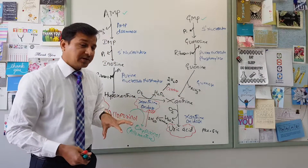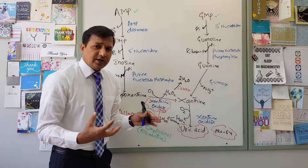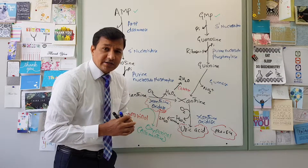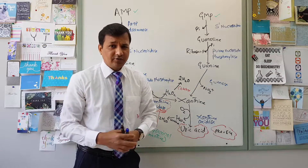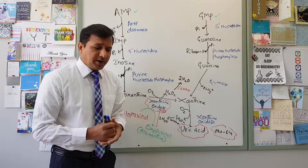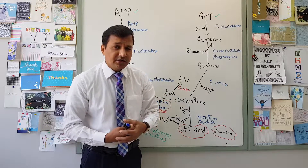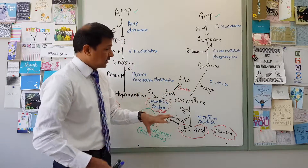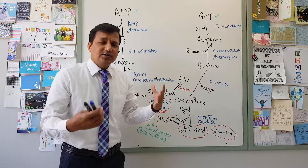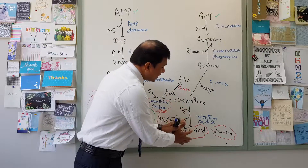Uric acid is the metabolic end product of purine nucleotides and it needs to be excreted from the body since it is considered a waste product, though some research papers suggest it also acts as an antioxidant. For simplicity, uric acid is a waste product of the purine degradation pathway and it is secreted by renal tubular cells into the urine.